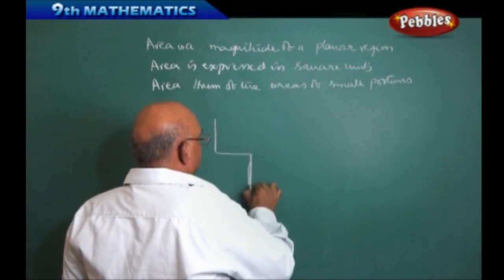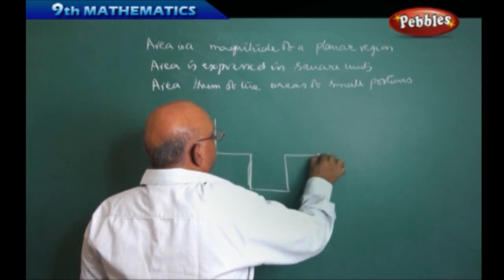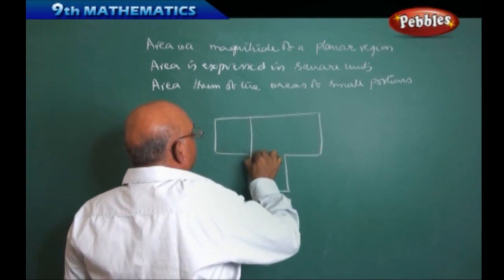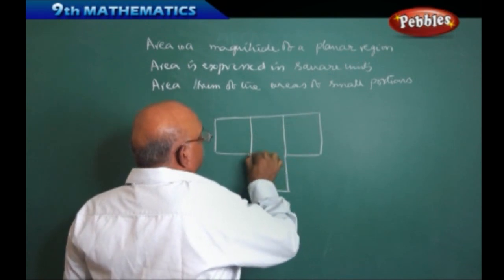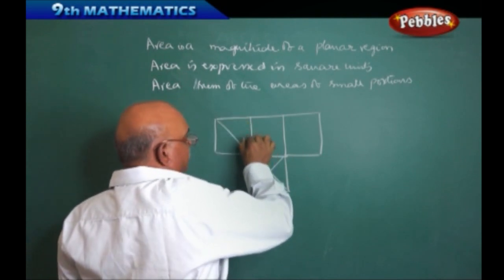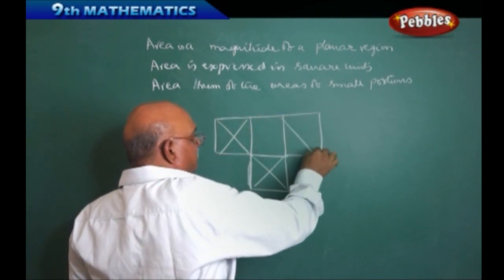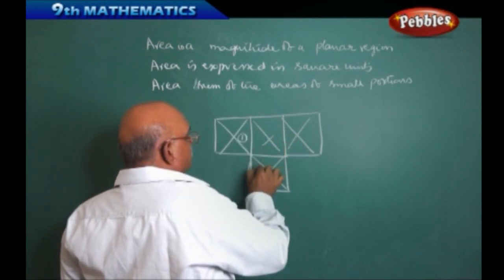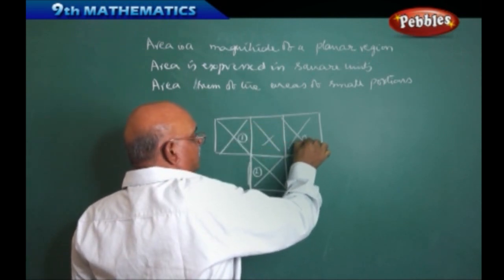I can find out the area here like this. I can find out the area of this portion. I can find out the area of this portion. I can find out the area of this portion plus this one. So, that 1, 2, 3, 4.